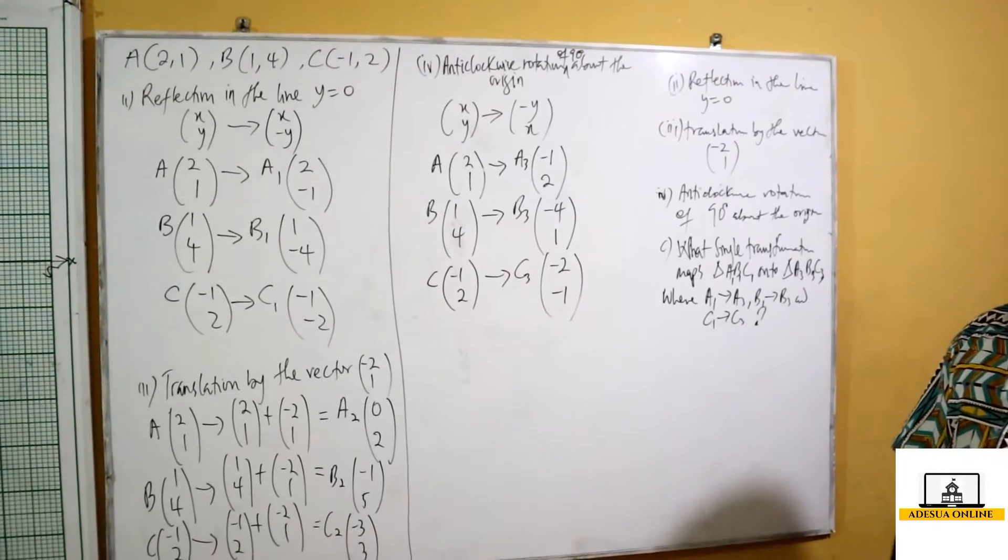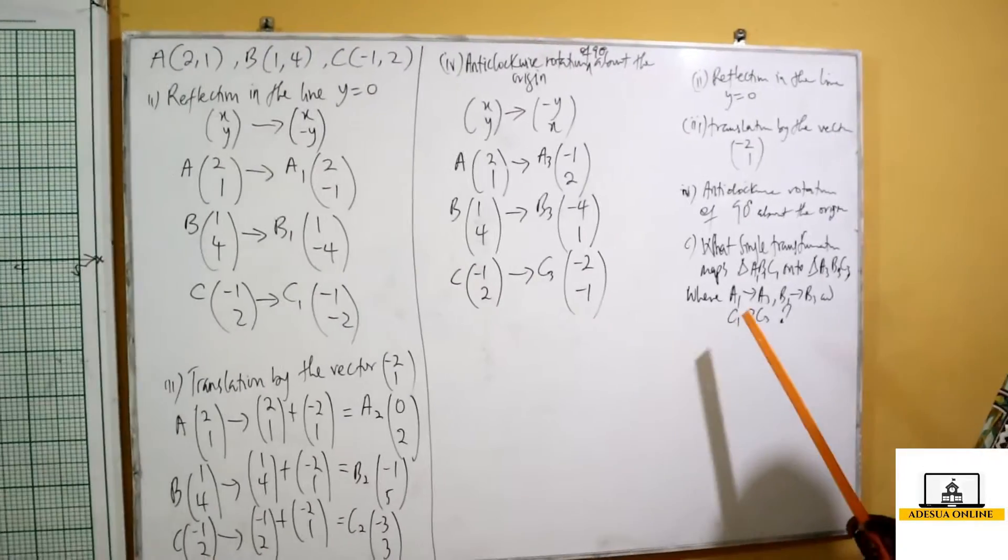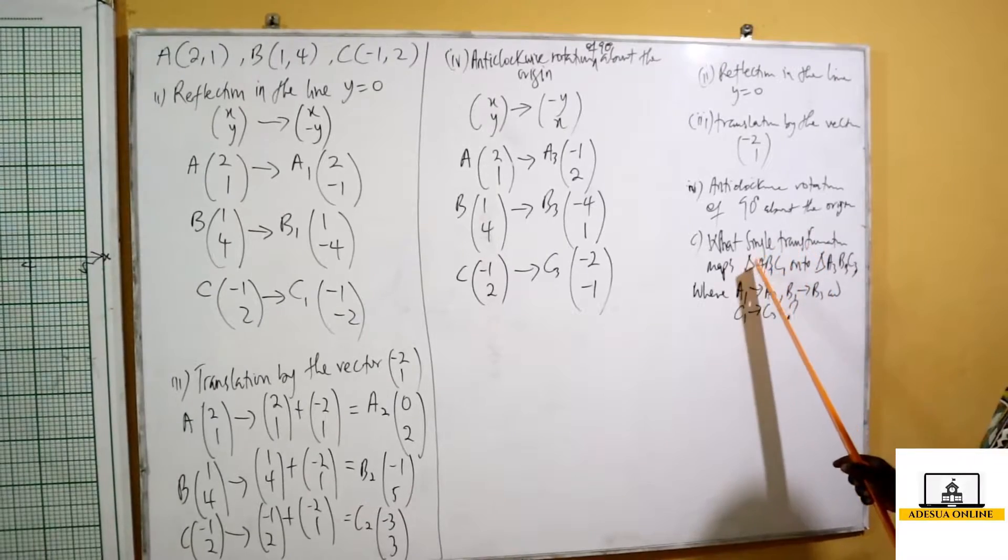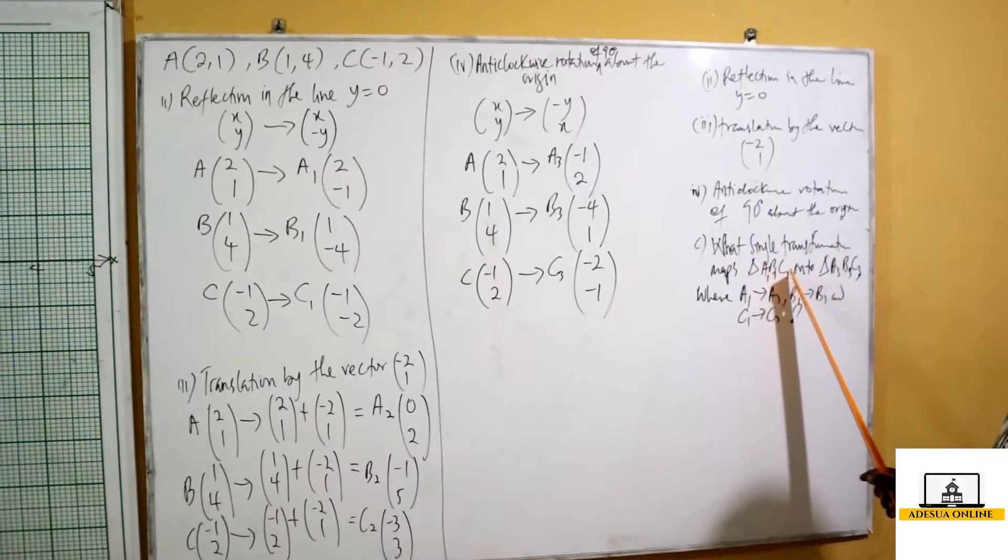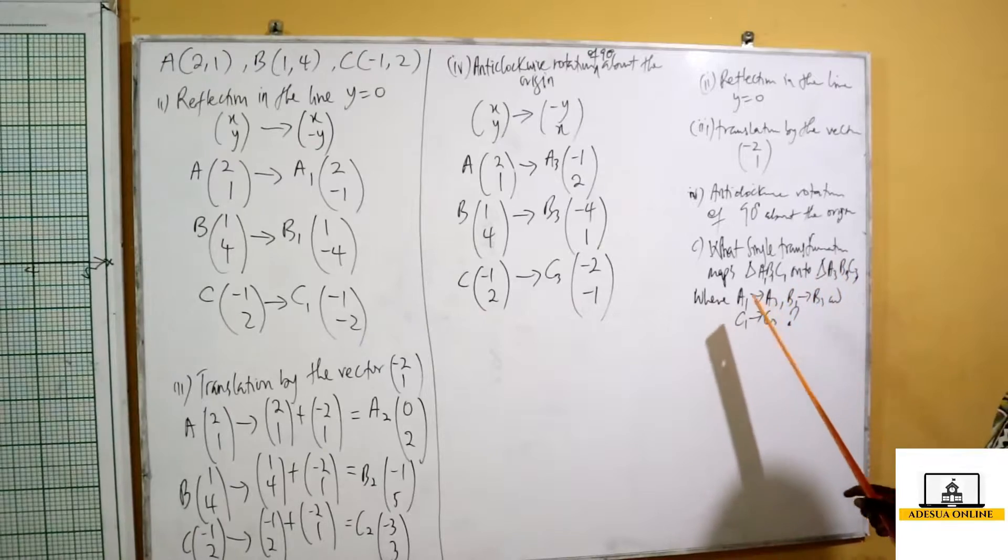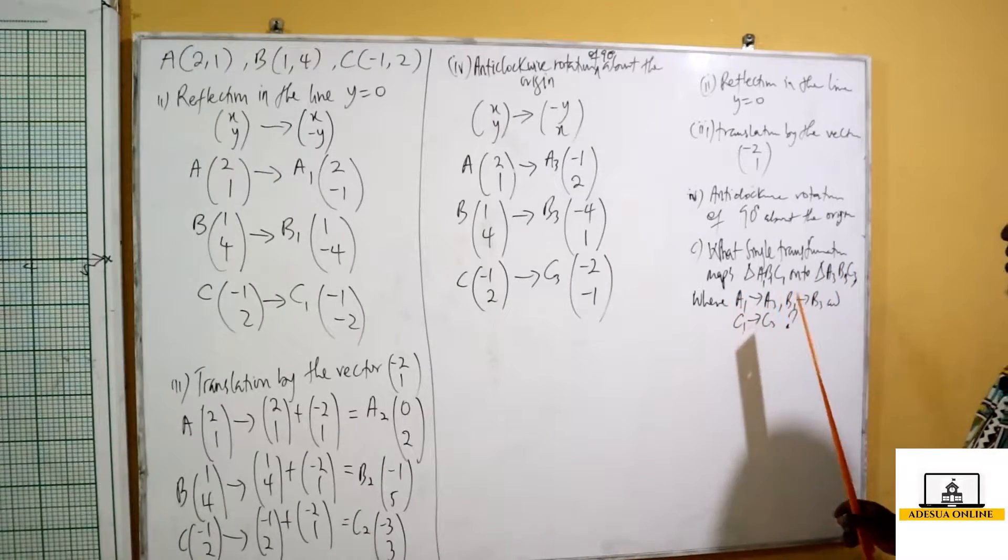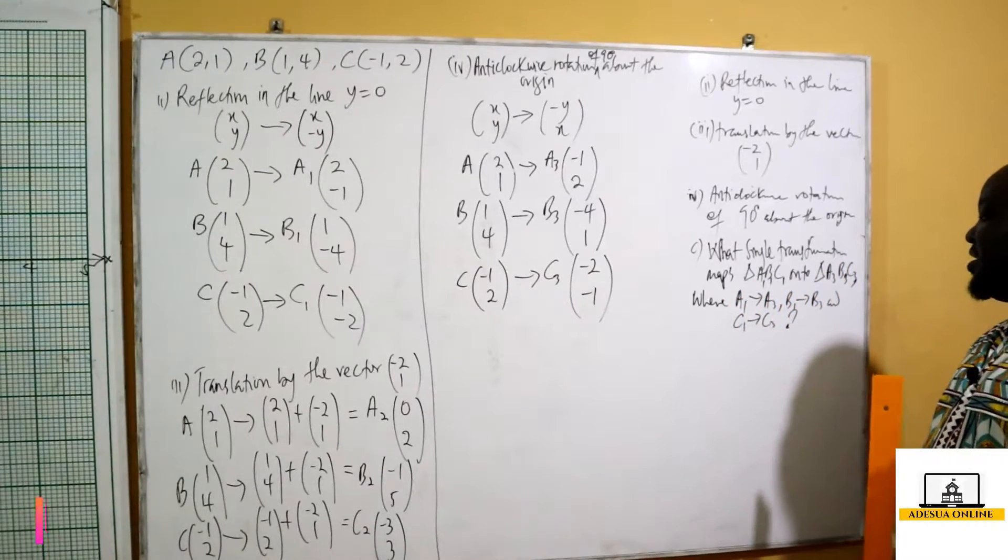So in our last part of the question, we were asked to find the single transformation which maps triangle A1 B1 C1 onto triangle A3 B3 C3, where A1 maps onto A3, B1 maps onto B3, and C1 maps onto C3.